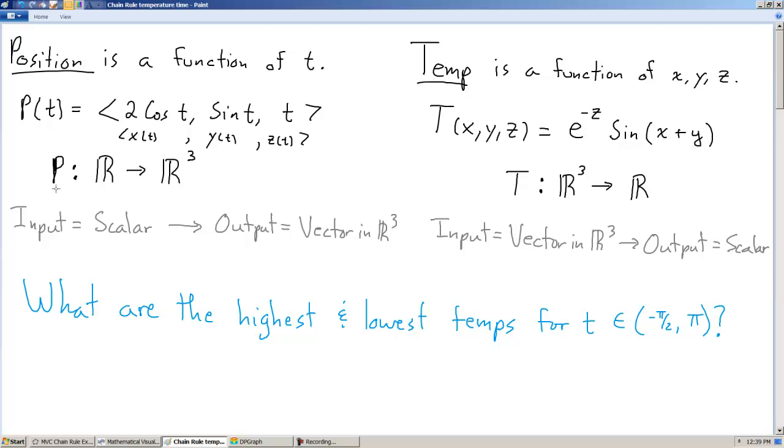What it really means is that for P, our input is a scalar, a real number, and our output is some vector in R3. And for T, our input is a vector in R3, and our output is a scalar.